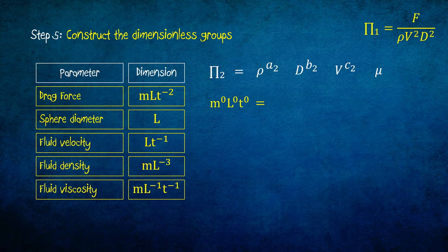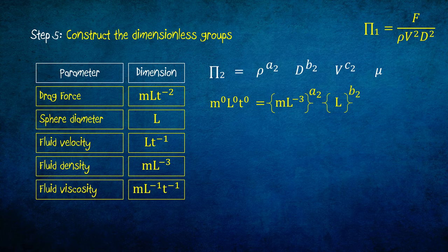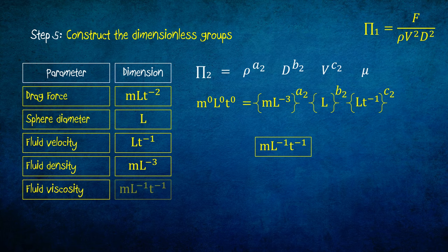We replace rho with its dimension, d with its dimension, v with its dimension, and mu with its dimension. Rearranging the power and solving it.